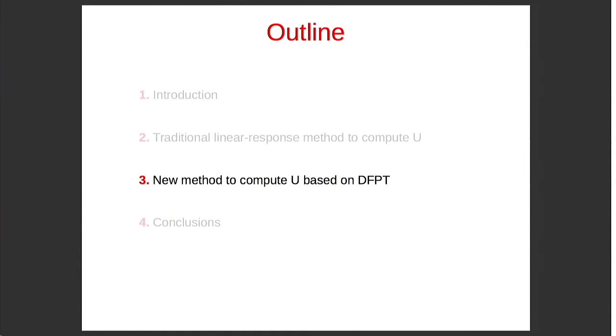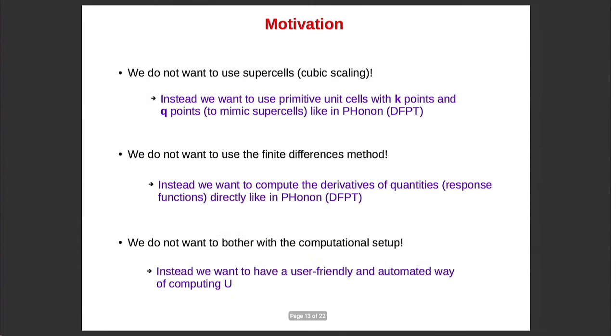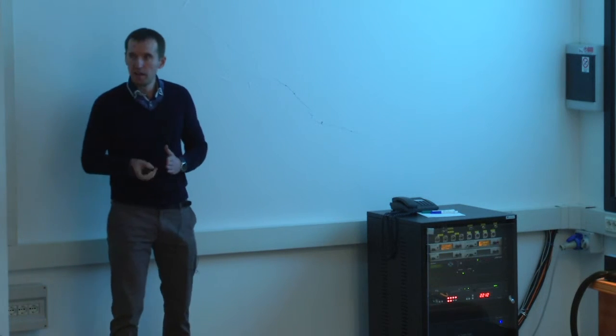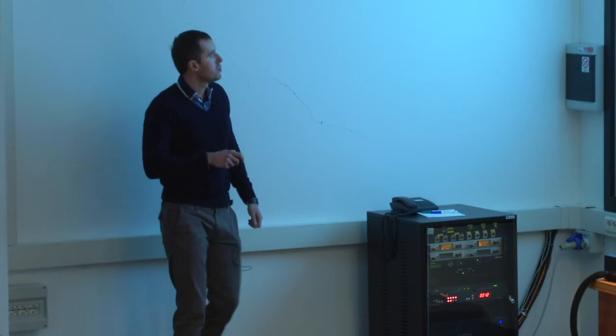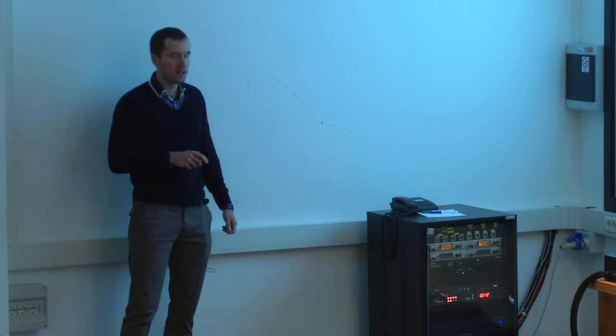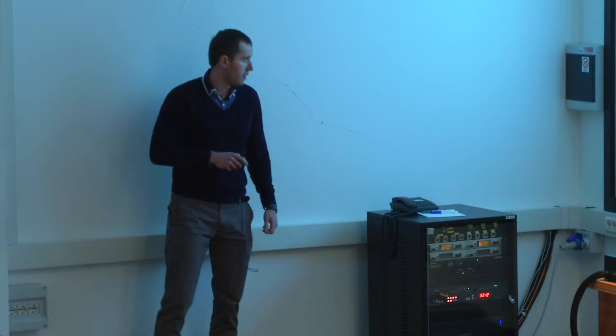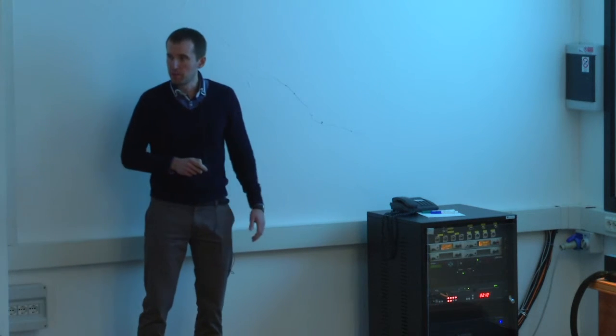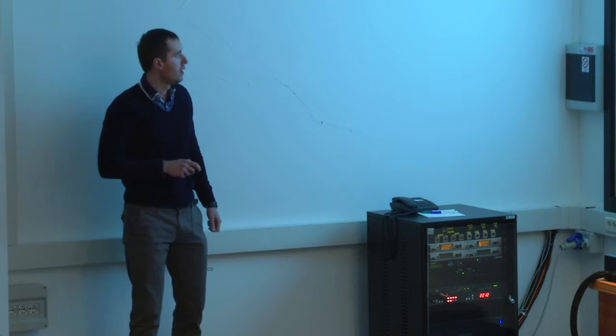So we decided to try to develop a more automated code to compute Hubbard U parameters. So this is our motivation. We don't want to use supercells because of the cubic scaling. We were inspired by the phonon code, so we want to use the primitive cells with k points and q points. So essentially, like in phonon, we don't want to use frozen phonon approach approximation. We want to use the DFPT with primitive cells and q points. So we want to use the same idea here. Then we don't want to use finite differences method. We want to compute directly the derivatives of quantities, like response functions, like in phonon again. And as I said, we want a more automated way of computing the Hubbard U parameters to do high-throughput studies.